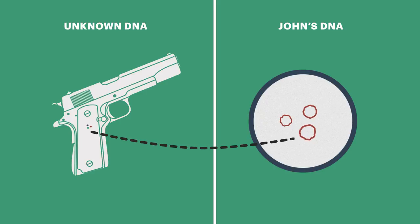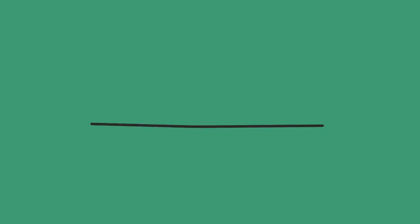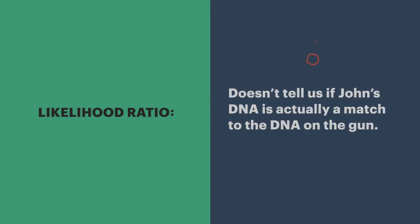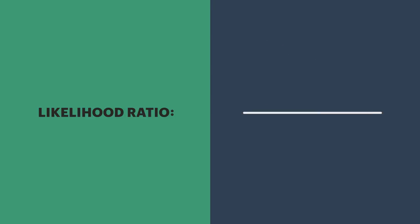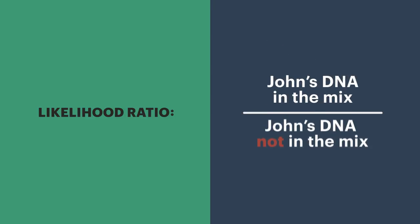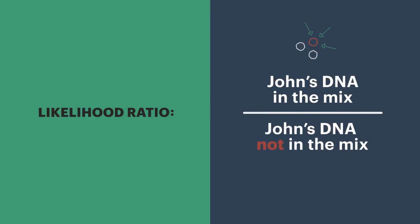FST compares the DNA on the gun and the DNA from John, and it generates something called a likelihood ratio. It doesn't tell us if John's DNA is actually a match to the DNA on the gun. It's complicated, but basically the likelihood ratio is a number that describes how probable it is that John's DNA might be in the mix.